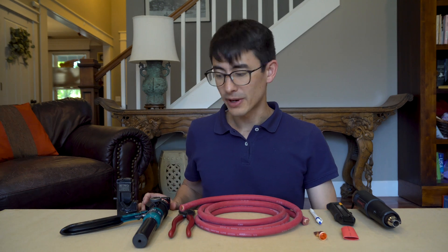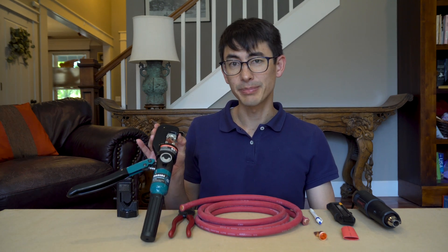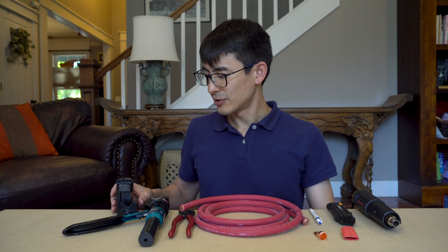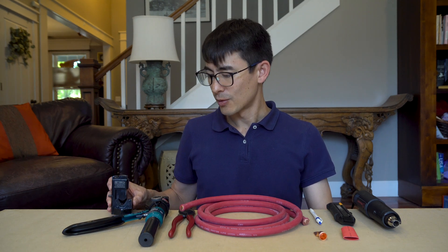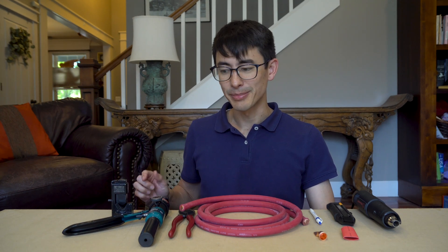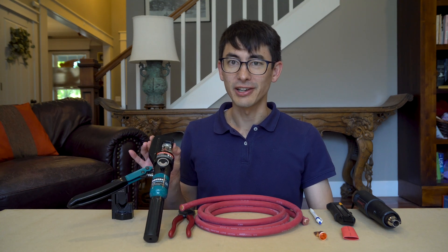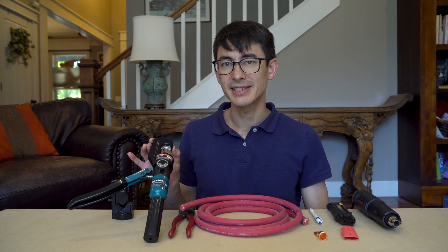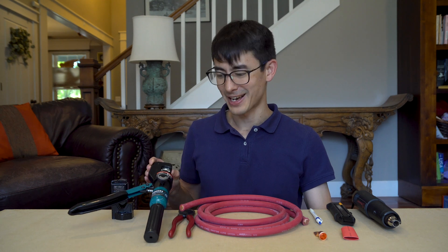To crimp the lug onto the wire, I have this hydraulic crimper, but you can also use this cheaper hammer lug crimper. We actually have experience using both of these crimpers and really recommend the hydraulic crimper instead because it makes consistent high quality crimps every single time.